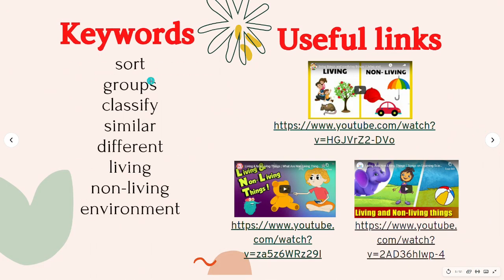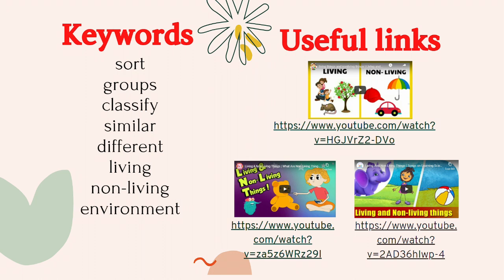These are the keywords we will use in our lesson today. Sort means to arrange systematically in groups or separate according to type. Groups is a number of people or things that are put together in a class. Classify means to arrange, like a group of people or things, in classes or categories according to shared qualities or characteristics. Similar means almost but not exactly the same — something that is not quite the same as something else. Different is the opposite of similar; it means not the same. Living means alive, and non-living means something that does not breathe, move, eat, or sense things. Environment is the surroundings or conditions in which a person, animal, or plant lives or operates.